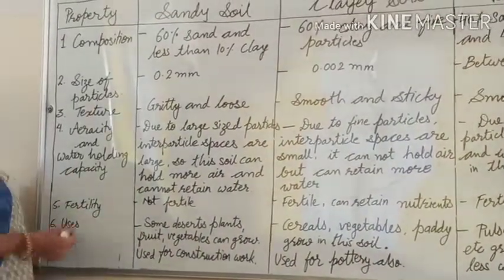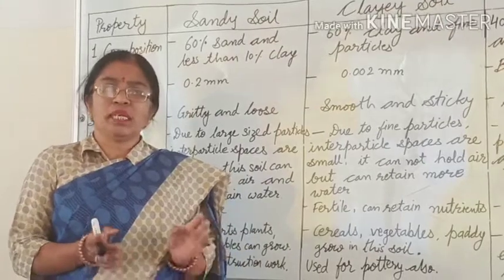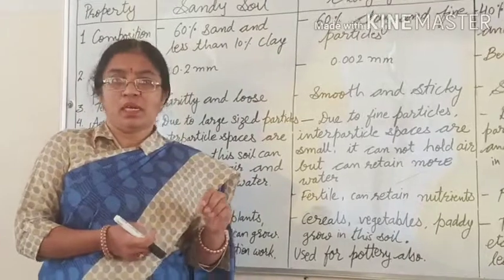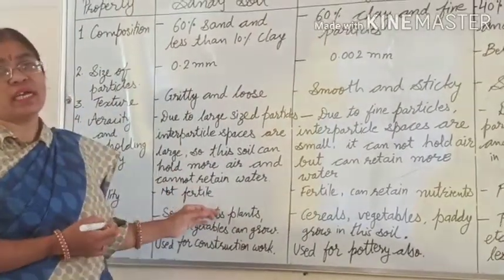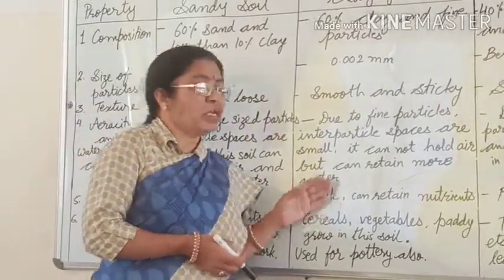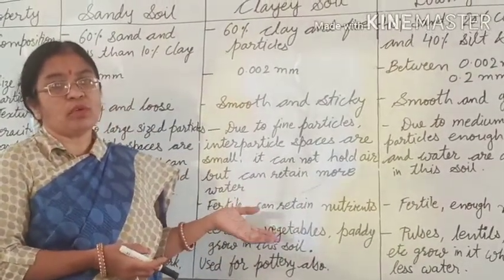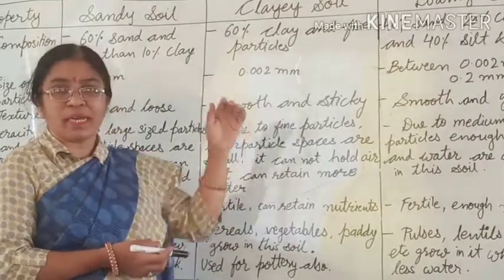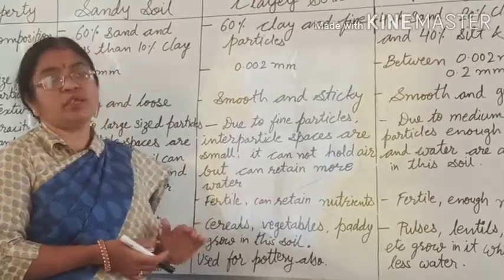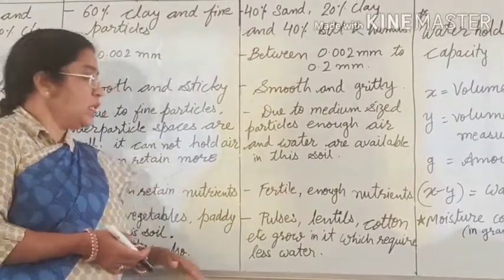Now if we talk about fertility: in sandy soil, since it cannot retain water, minerals and nutrients will also not be available — they go to the water table. That's why this soil is not very fertile and vegetation is less. In clay soil, it can retain more nutrients due to its higher water holding capacity, and minerals coming down from upper layers are retained, so it is fertile. In loamy soil, enough nutrients are available for growing plants.